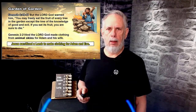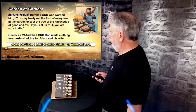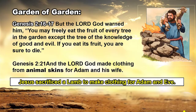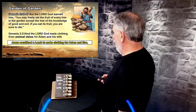Jesus stepped in as soon as Adam and Eve sinned and took on the punishment we deserve. In Genesis 2:21 it says the Lord God made clothing from animal skins for Adam and Eve. When they learned about good and evil from eating the fruit, they realized they were naked. God knew they had broken his commandment, so the Lord God got a lamb, killed it, and used the animal skins to clothe Adam and Eve.